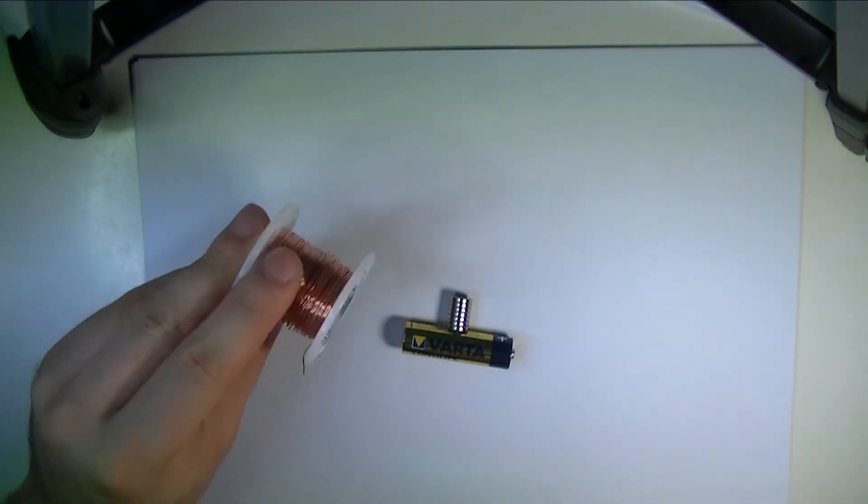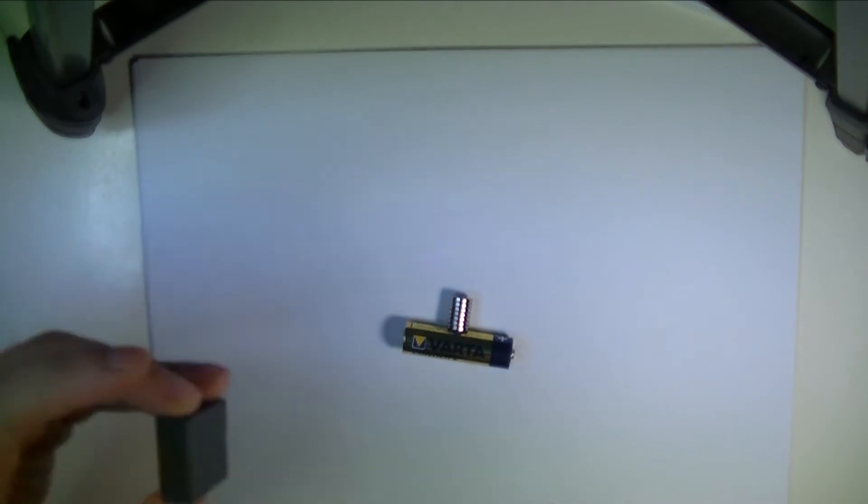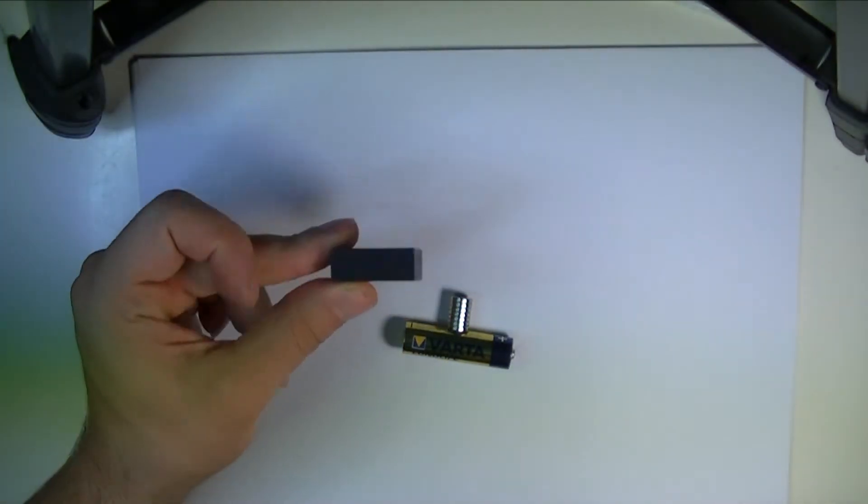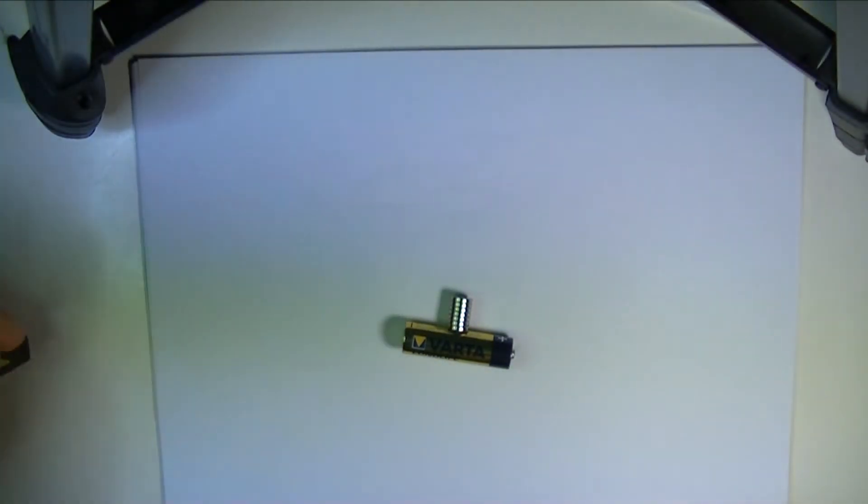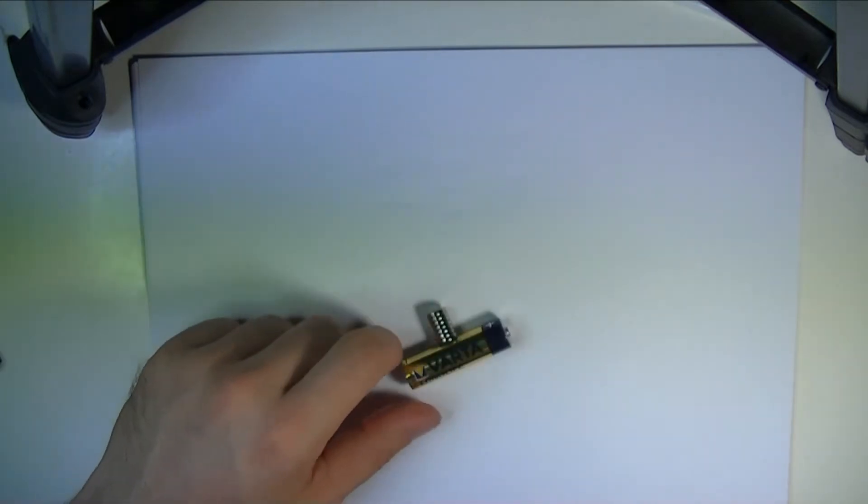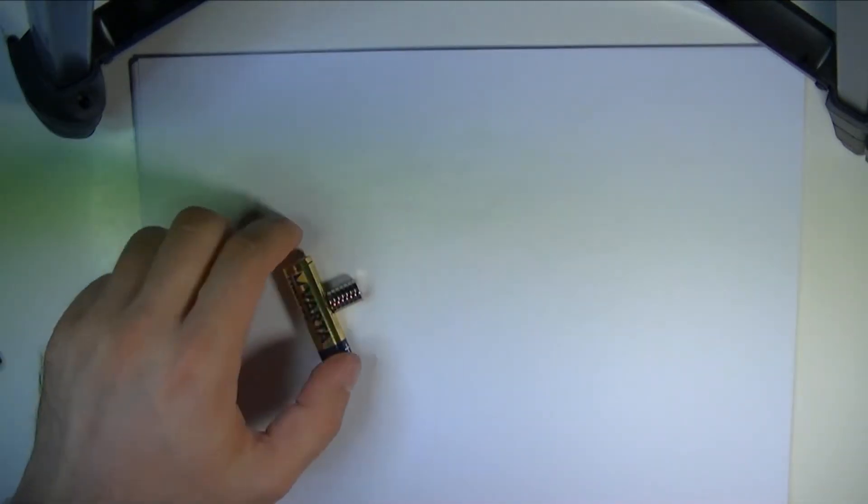We're going to use some copper wire that we're going to wrap around two objects. One's going to be kind of rectangular and then the other is going to be square. But before I build it I just want to explain how it works.